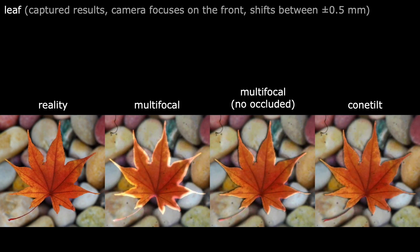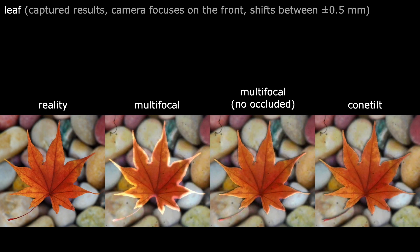Here, we shift the camera between plus and minus half a millimeter from the center. As can be seen from the third column, the occlusion problem cannot be solved entirely by removing the directly occluded contents behind the leaf.